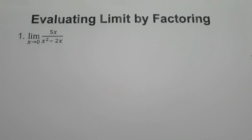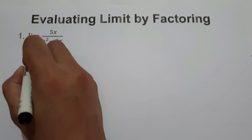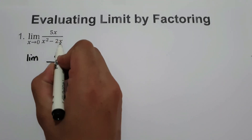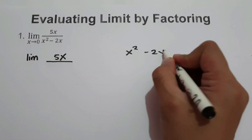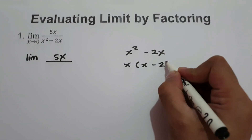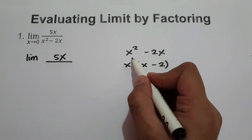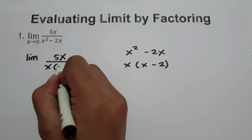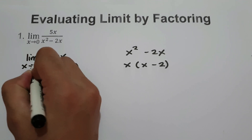But if we are going to use factoring to solve the given expression, we have the limit of 5x over — since x squared minus 2x is factorable, the factors of x squared minus 2x are x and x minus 2. If we multiply x and x minus 2, we get x squared minus 2x. So we have limit of 5x over x times x minus 2 as x approaches 0.